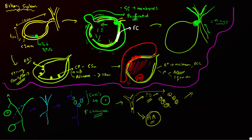Primary sclerosing cholangitis (PSC) is an idiopathic inflammatory condition often associated with IBD — particularly ulcerative colitis more than Crohn's disease. Imaging shows alternating regions of stricturing and dilatation of both extrahepatic and intrahepatic bile ducts, producing a characteristic string of beads appearance.